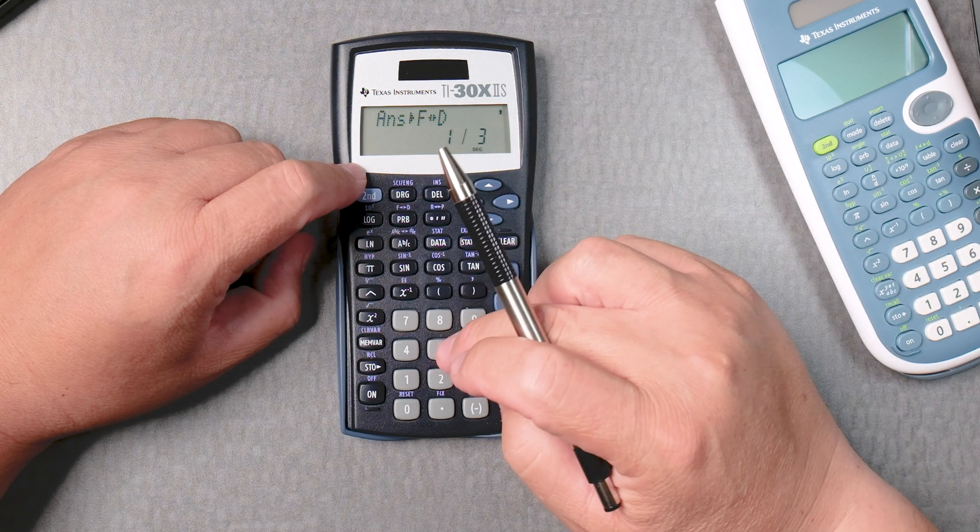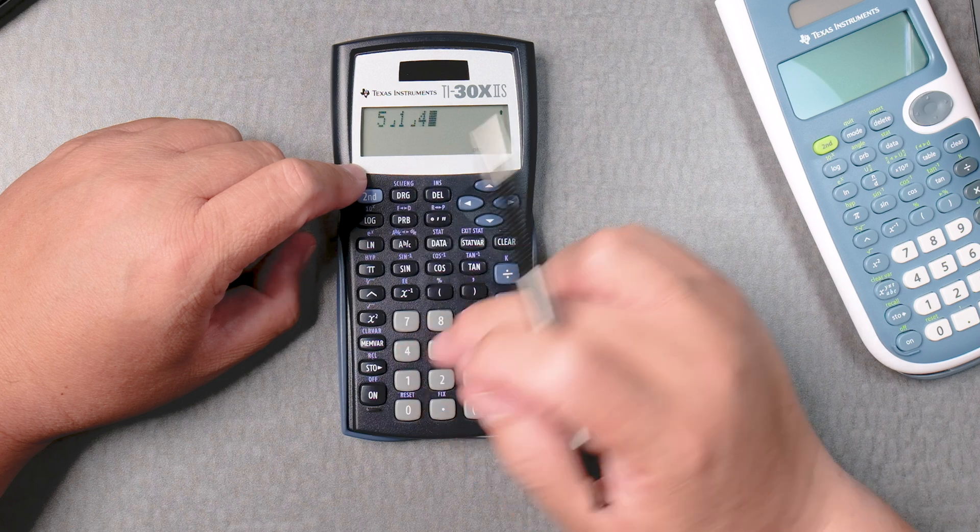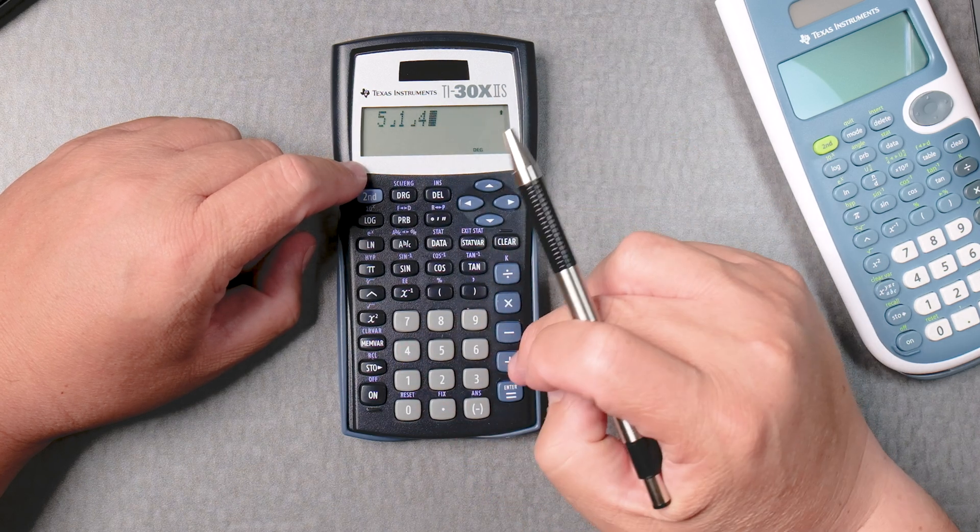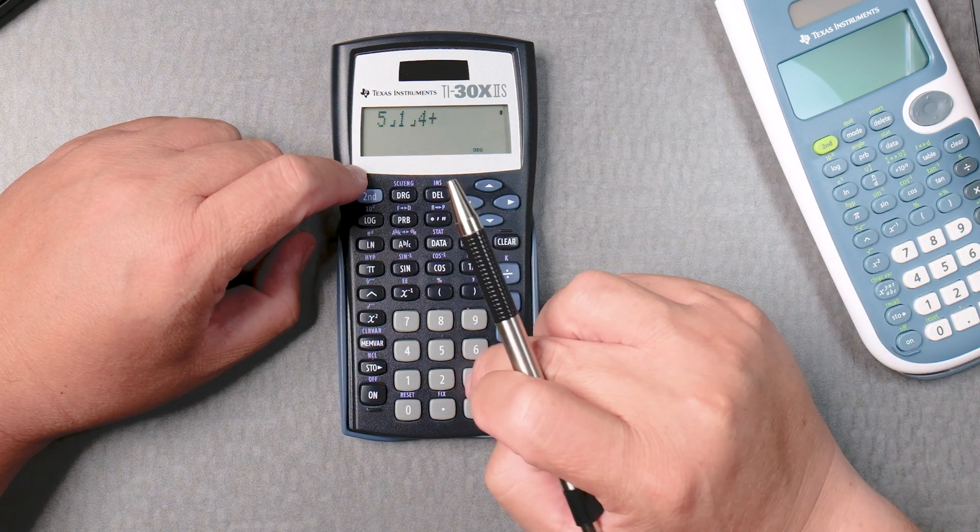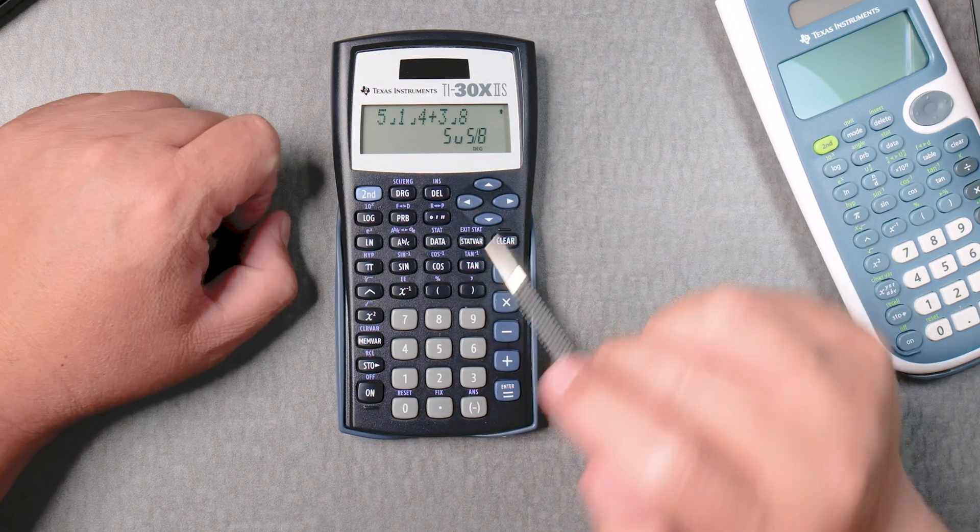And then let's say you had a mixed number like 5 ABC 1, ABC 4, 5 and one-fourth, and then you add 3 ABC 8 and then you press equals, gives you the answer.